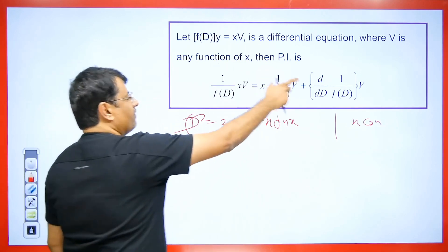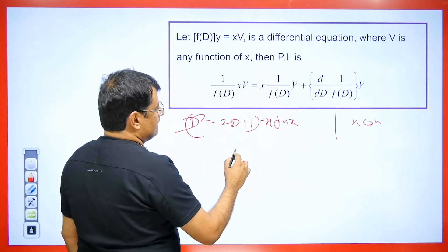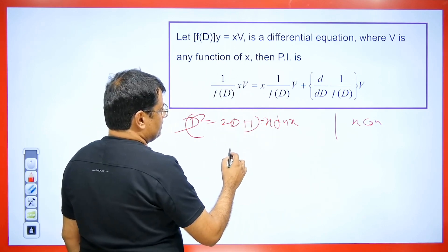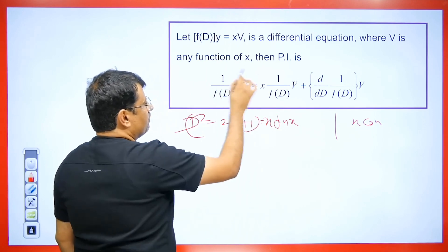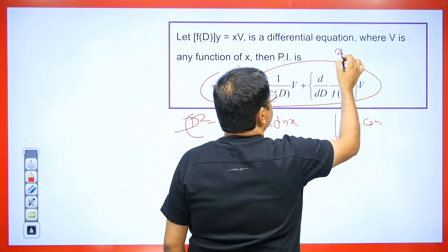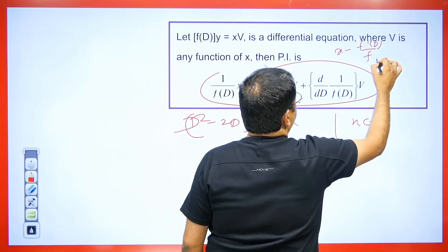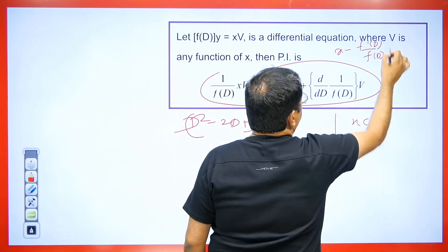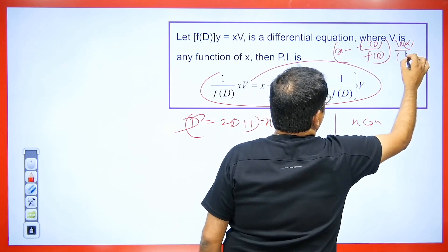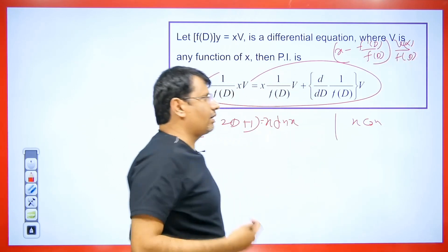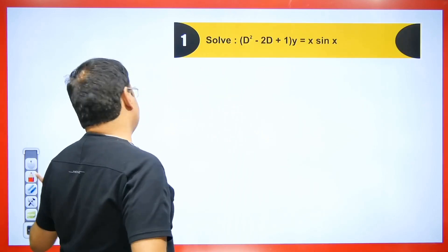We have a formula, and there is another formula we can write. Suppose you shift the f(D) term to the denominator; we can also write this formula as: x minus [f'(D)/f(D)] multiplied by v(x)/f(D). This is also a formula we have. I will explain a question to make you understand how we will solve this.